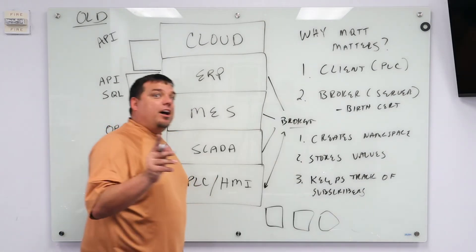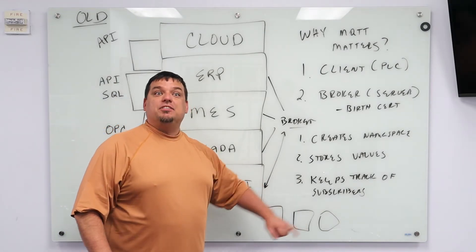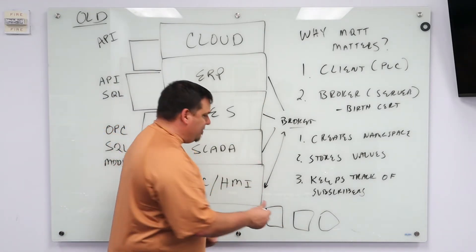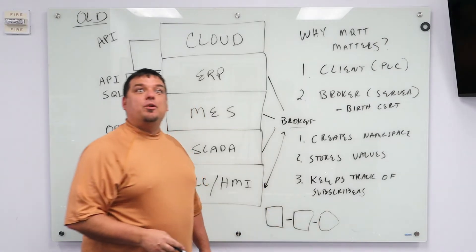So I could have three PLCs, three lines running, but my HMI could work for all three pieces of equipment through my broker without having an explicit connection between the equipment, but through the broker.